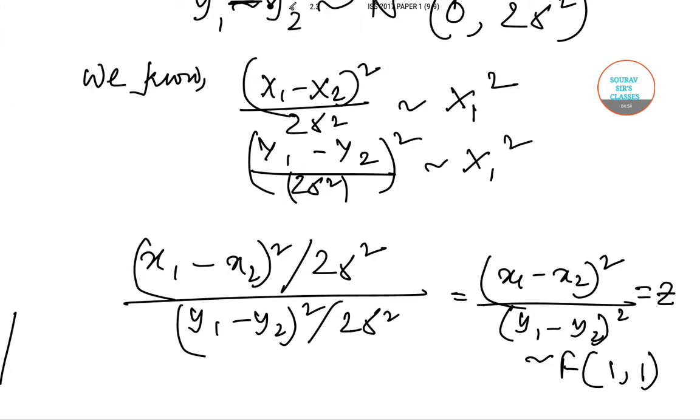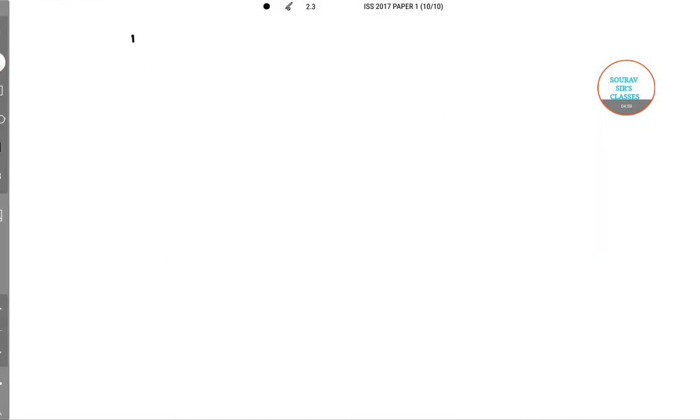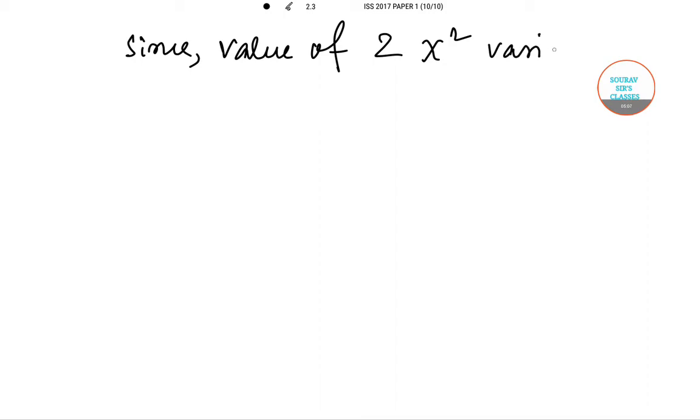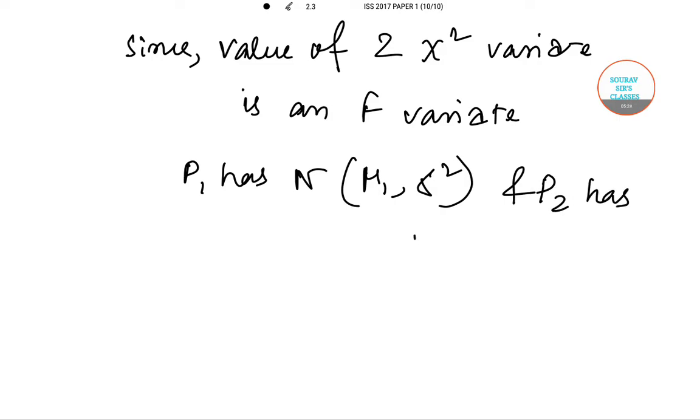Since the value of 2 chi-square variates is an F variate, let P₁ has N(μ₁, σ²) and P₂ has N(μ₂, σ²). So option d is the correct answer for question number 27.